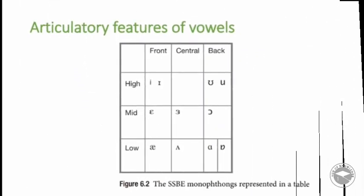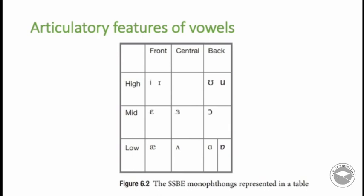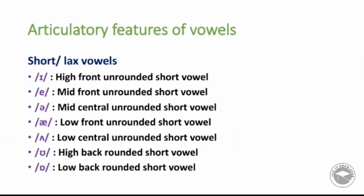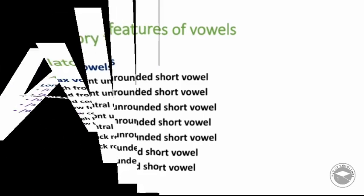Short vowels: /ɪ/ is a high front unrounded short vowel; /e/ is a mid front unrounded short vowel; /ə/ is a mid central unrounded short vowel; /æ/ is a low front unrounded short vowel; /ɑ/ is a low central unrounded short vowel; /ʊ/ is a high back rounded short vowel; and /ɒ/ is a low back rounded short vowel.